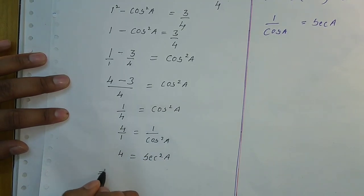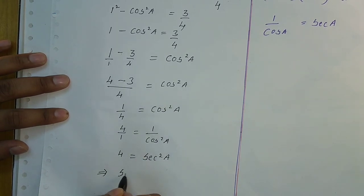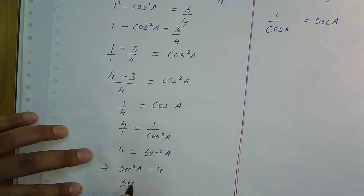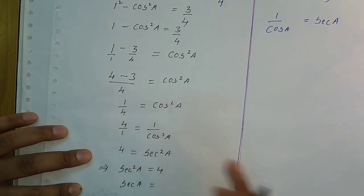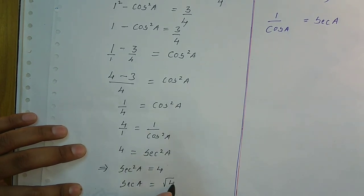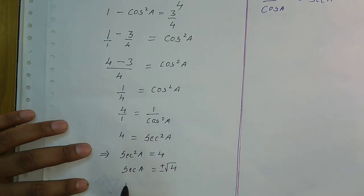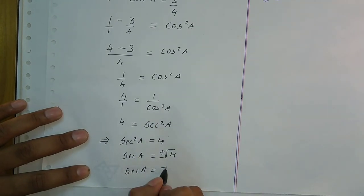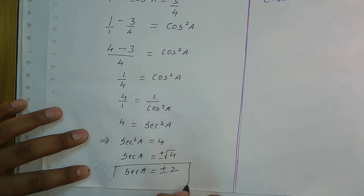So sec²a = 4. We take the square root on both sides, which gives sec a = ±√4 = ±2. So the value of sec a is ±2. This is the answer.